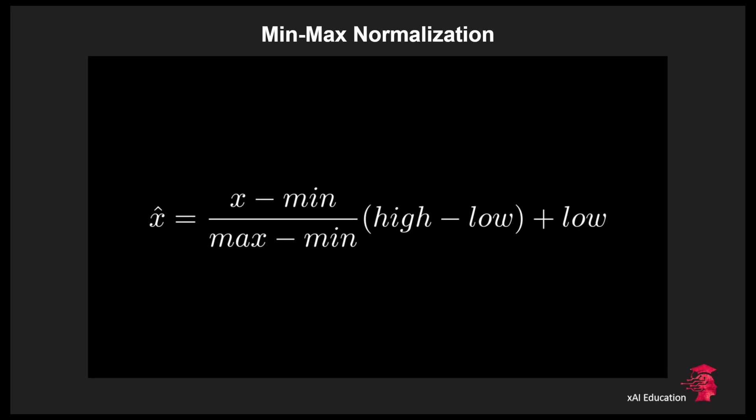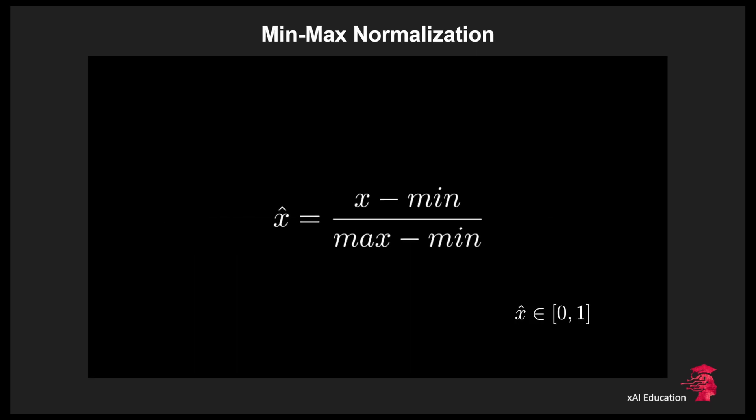A disadvantage of this technique is that this scaling is sensitive to outliers. Why is that? Well we use the minimum and maximum values of our feature for the computation of the transformation. The formula of the min-max normalization also known as interval scaling or range normalization can be simplified when we want to scale our feature values to the interval 0 to 1.